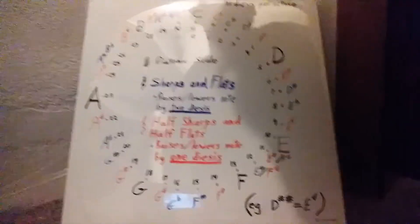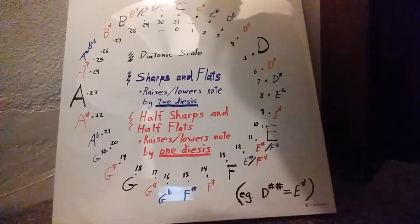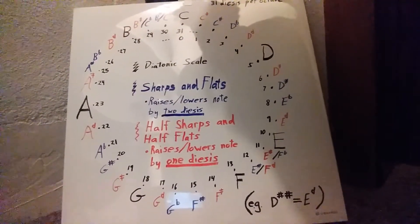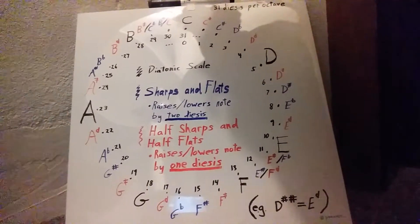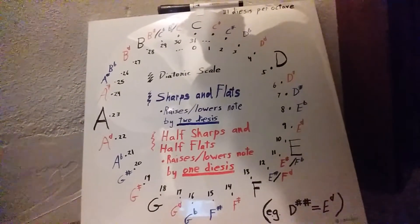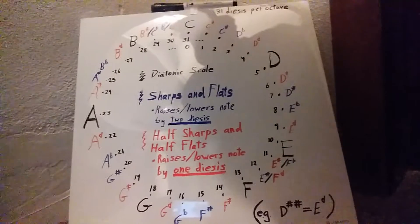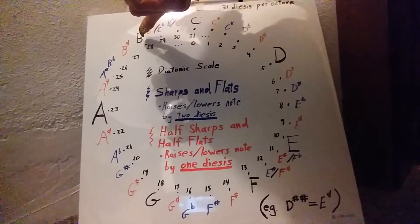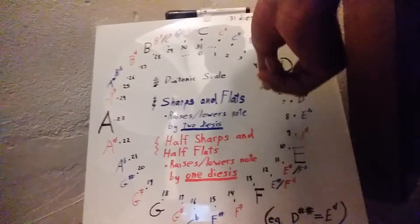Let's take a look at the wheel of pitches here. A major third in 31-tone equal temperament is 10 dieses. The dieses is the space between notes — in 12-tone music the half step would be the smallest step, but in 31 tones it's called the dieses and it's equivalent to a half sharp or a half flat. So 10 dieses is equivalent to a major third in 31-tone equal temperament. If we start on a B and make our way 10 steps clockwise, we get to a D-sharp.